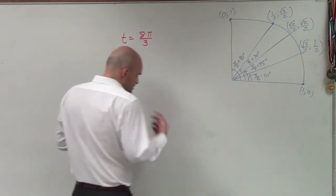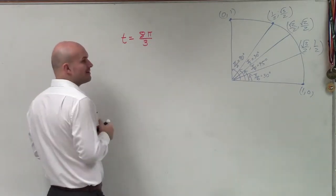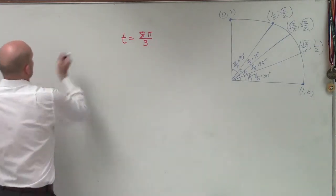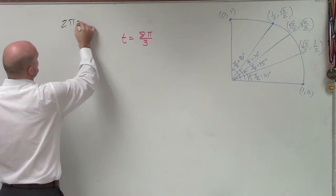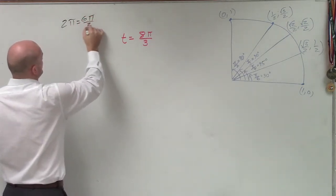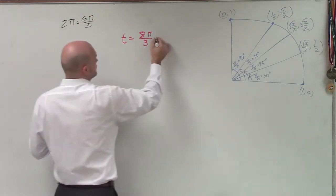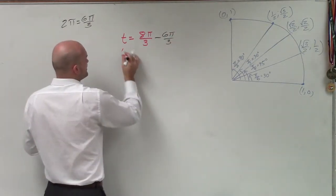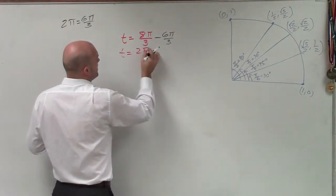So to do that, I can just subtract my revolution. We know that a whole revolution around a circle in terms of thirds would be 6π over 3, because 2π is the same thing as 6π over 3. So I'm going to subtract 6π over 3. Therefore, by subtracting that, I have t equals 2π over 3.